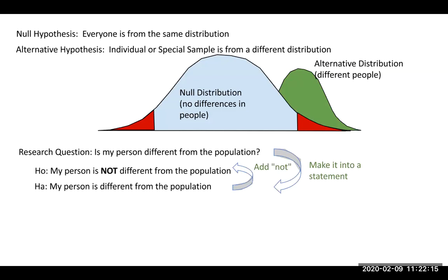Notice I didn't use the wording 'is my person the same as the population?' There are a few reasons why we don't want to do that. We're never trying to prove that people are the same — we're always trying to prove that people are different. That's our focus. Trying to make a research question to prove people are the same is not going to work, and that would mess up these steps. So remember, we're always going to be talking about differences when we build our research question.